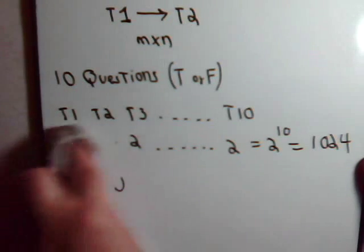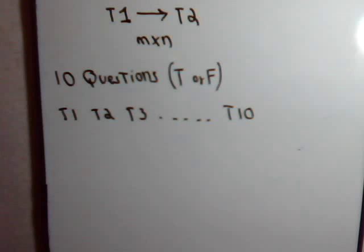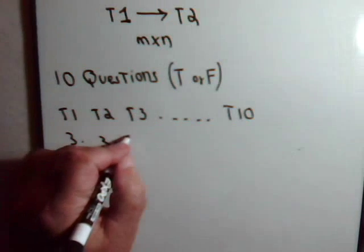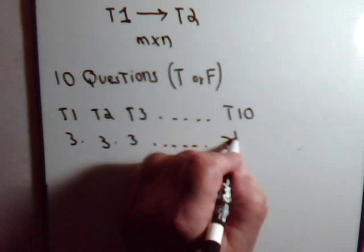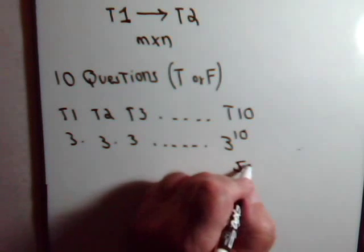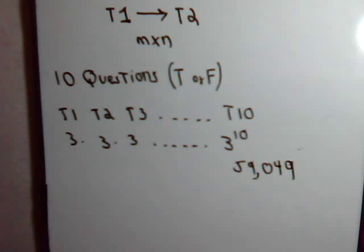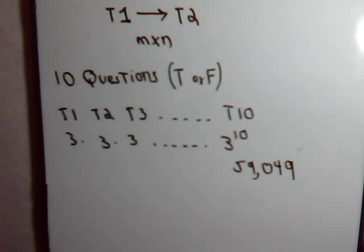So in this case, we would have not 2 times 2 times 2, but we are going to have 3 times 3 times 3, all the way on out to 3 to the tenth. Or in this case then, there would be, I think it comes out to like 59,049. So in this instance, that would then be the number of different ways that the test could be performed.